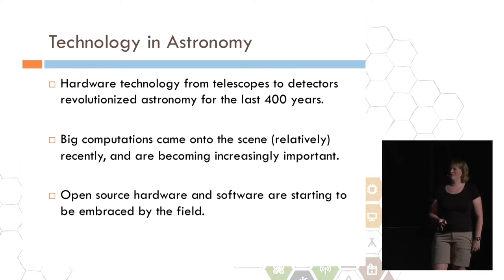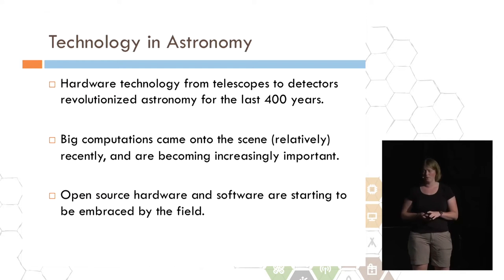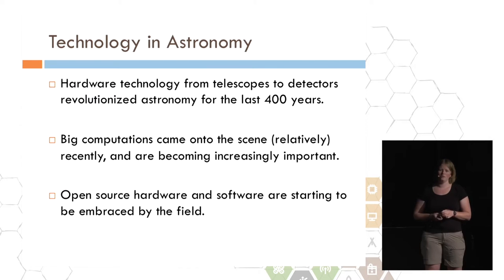I hope I was able to convey to you today that hardware technology has really made a huge impact on the advancement of astronomy in many different fields in the last 400 years. But big computations have only come onto the scene relatively recently in this history of 400 years of technology. It's only really the last 20 to 30 years that this has become super important. Finally, open source hardware and software are starting to be embraced by the field. We're hoping that this kind of new technology that's available, for example, 1.5 billion smartphones over the planet, will allow us to make new scientific discoveries that never would have been possible before. Thank you for listening to me today.